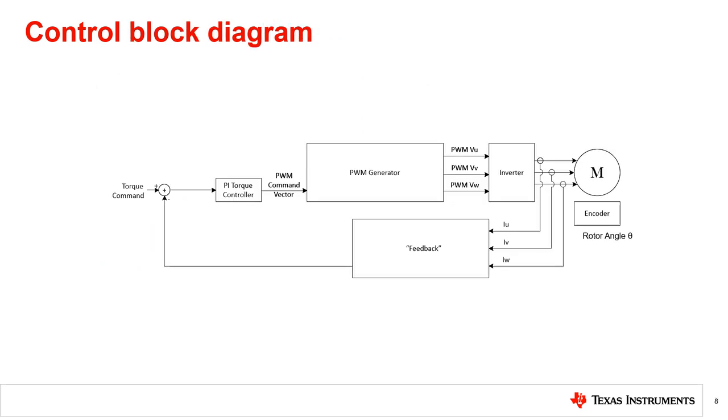Let's take a look at what a motor control system might look like. The PWM generator will take some input command and apply signals to the inverter for each motor phase, resulting in phase currents and motor rotation.